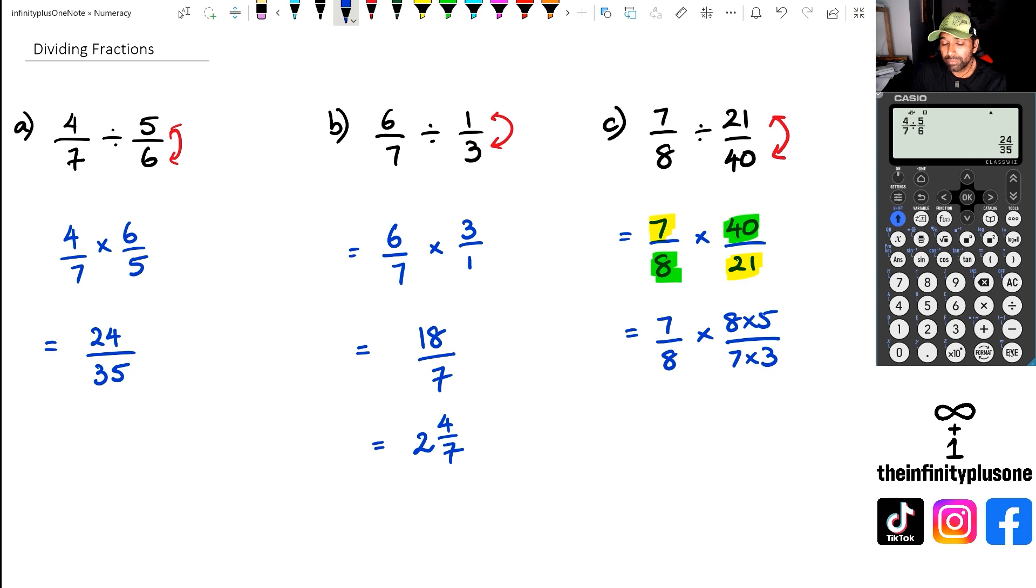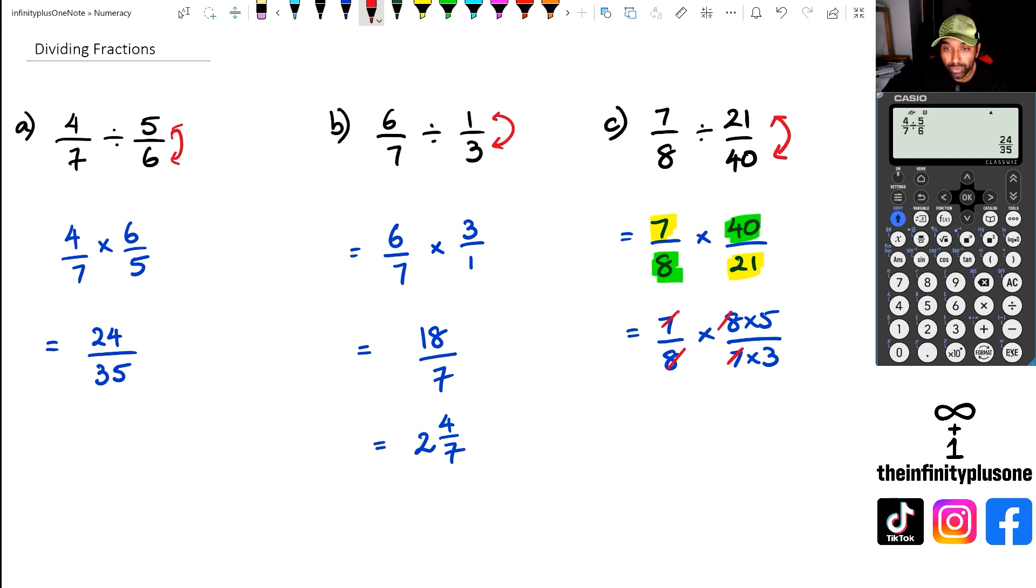And at this point, because I'm multiplying everything, what I can do is I can start canceling out the common factors in the numerator and denominator. So I've got seven as a common factor, eight as a common factor in both denominator and numerator.